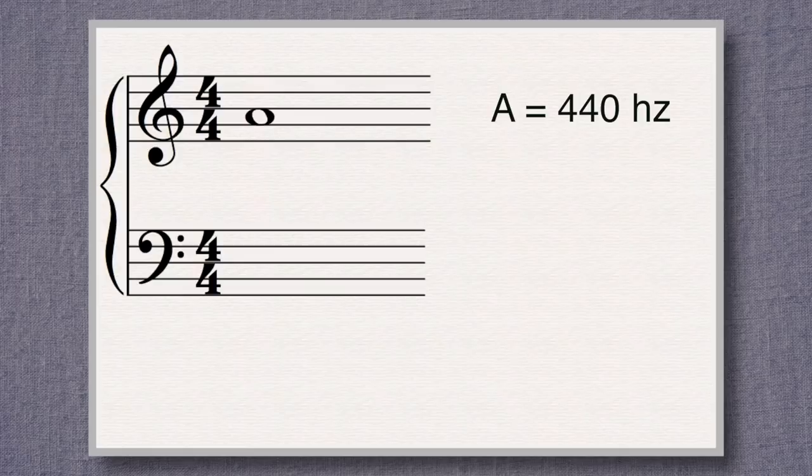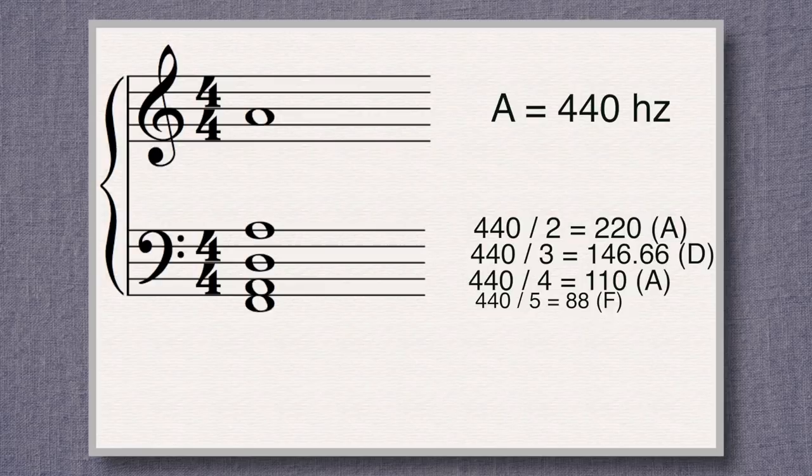What if you divided the fundamental pitch? Then we would get the undertone series: dividing by two gives an octave lower; dividing by three gives an octave plus a perfect fifth. It's a mirror of the overtone series. This concept was explored by Henry Cowell in New Musical Resources and by the composer Harry Partch, but for centuries it was not thought to be physically possible.